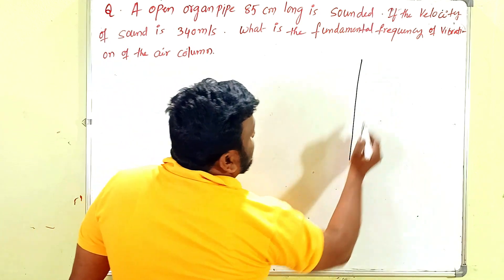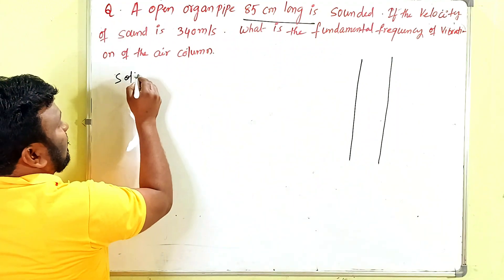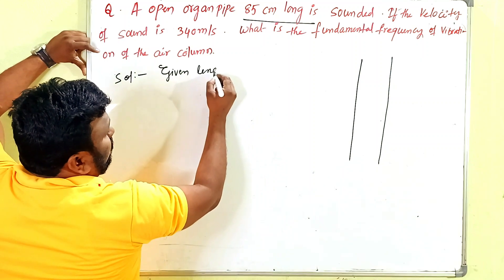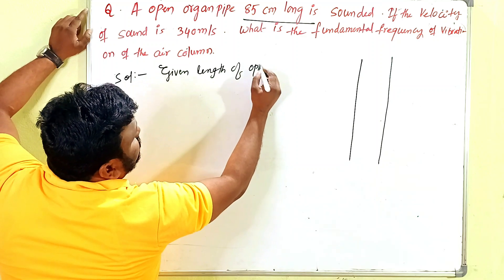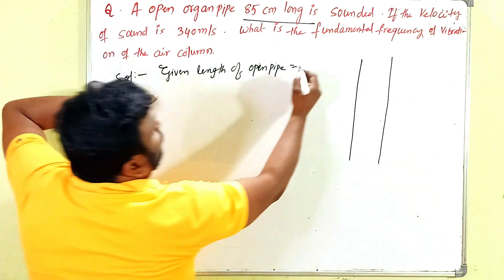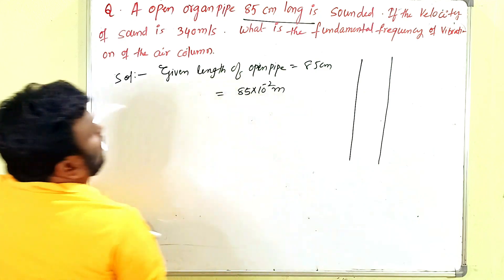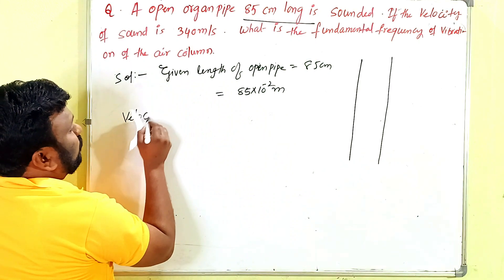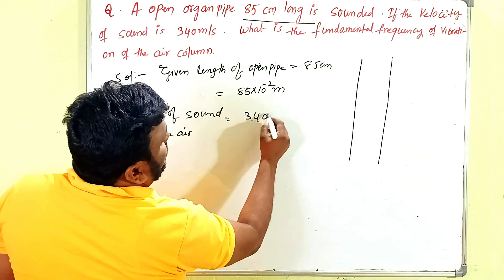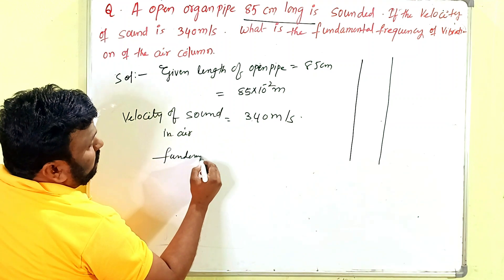This is an open organ pipe. The pipe length is 85 cm long. First we have to write the given data. The length of the open pipe is 85 cm, which we convert to meters as 85 × 10⁻² meters. The velocity of sound in air is given as 340 meters per second. We have to find the fundamental frequency.